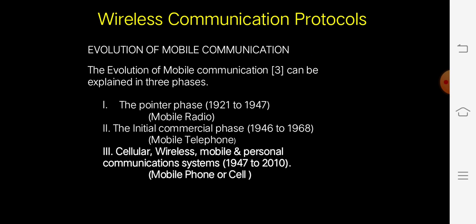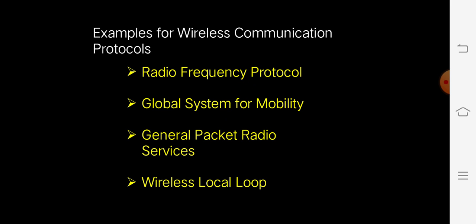The next phase is the cellular, wireless, mobile, and personal communication system phase, during the years 1947 to 2010. During that period, mobile phones or cell phones were invented and introduced. Examples of wireless communication protocols include: Radio Frequency protocol, Global System for Mobile communication — that is GSM — General Packet Radio Service — that is GPRS — and Wireless Local Loop — that is WLL.